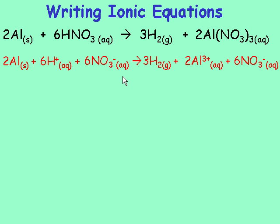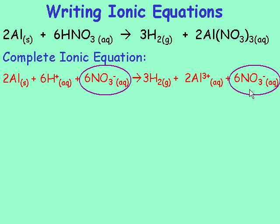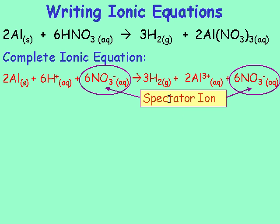This form of the equation is called the complete ionic equation. Notice we have 6 NO₃⁻'s on the left, and exactly the same — 6 NO₃⁻'s — on the right. It does not change at all. An ion which does not change from reactants to products is called the spectator ion.